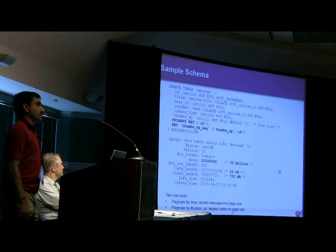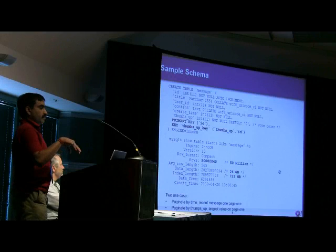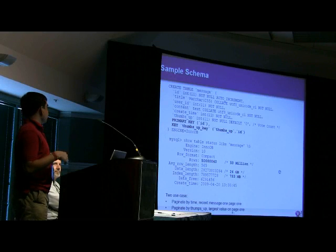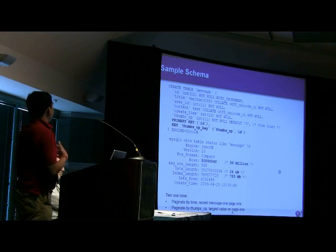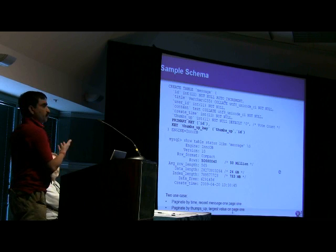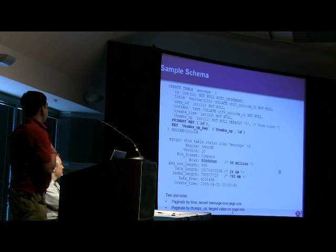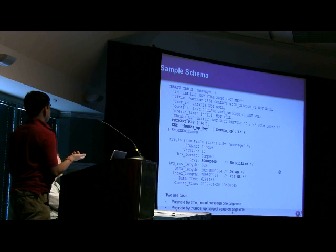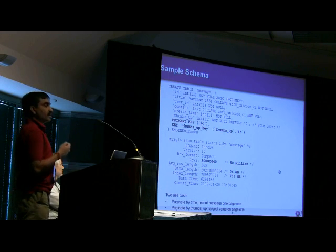I'm going to walk through a simple schema and apply pagination techniques to this schema. So I have a message stream table that has a primary key as the ID and users can post messages there. So message has some content, and create time for the message.